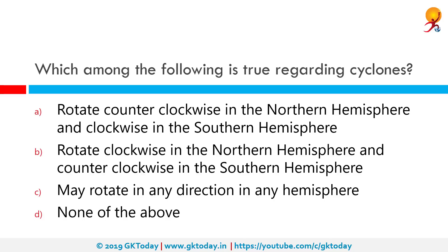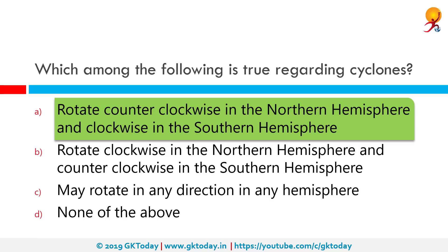Which among the following is true regarding cyclones? The correct answer is that they rotate counterclockwise in the northern hemisphere and clockwise in the southern hemisphere. For cyclones, there is low pressure at the center. In the northern hemisphere it is a counterclockwise or anti-clockwise pattern of wind direction, whereas in the southern hemisphere it is clockwise. There are also entities known as anti-cyclones where the pressure at the center is high and the pattern of wind direction in the northern hemisphere is clockwise, whereas in the southern hemisphere it is anti-clockwise.